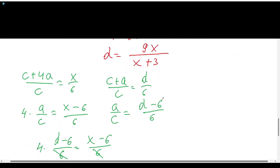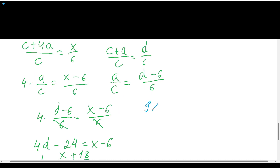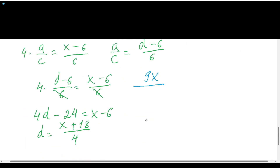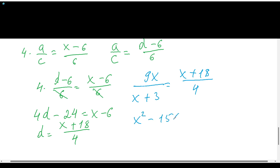Now we have d in terms of x two different ways, so we equate them: 9x over (x + 3) equals (x + 18) over 4. By cross multiplication, we get x² − 15x + 54 equals 0, which gives x₁ = 9 and x₂ = 6.